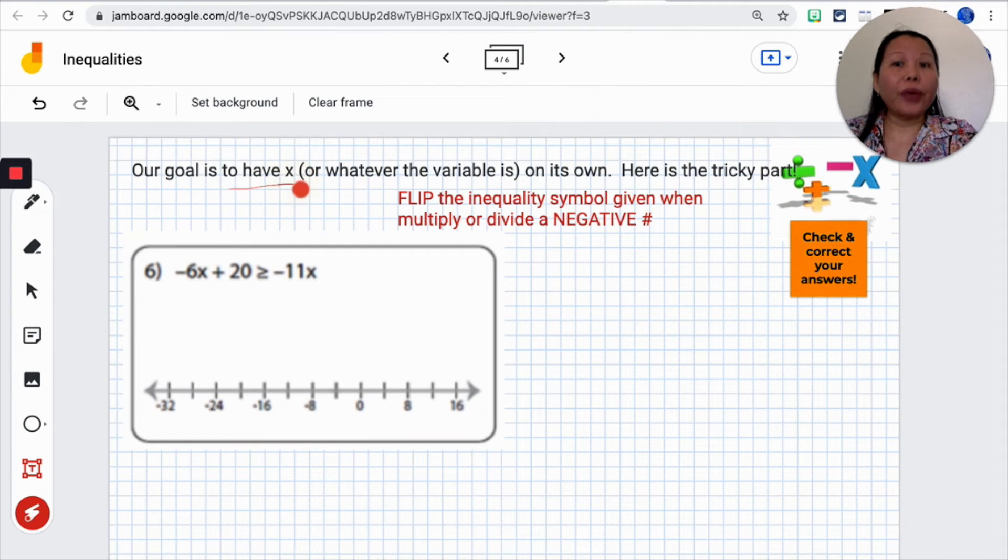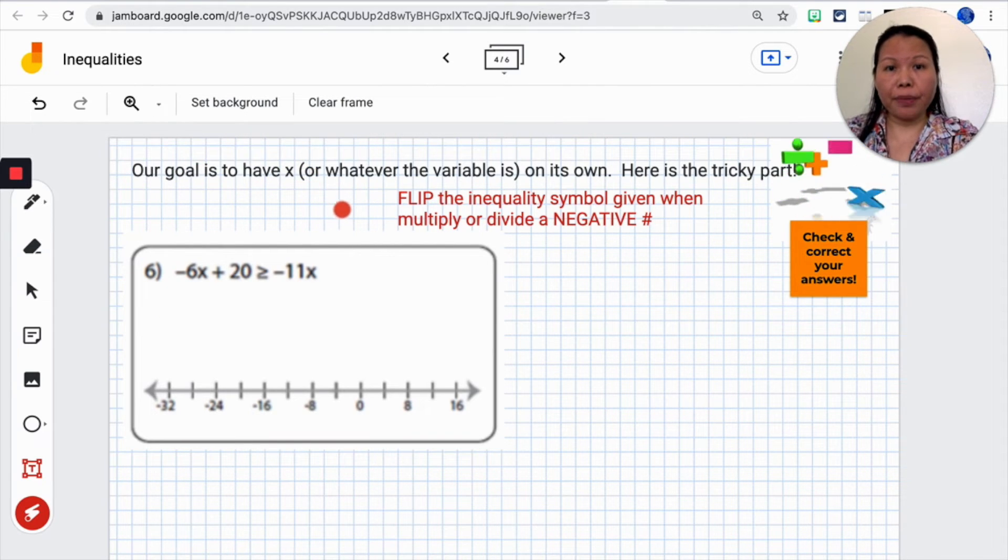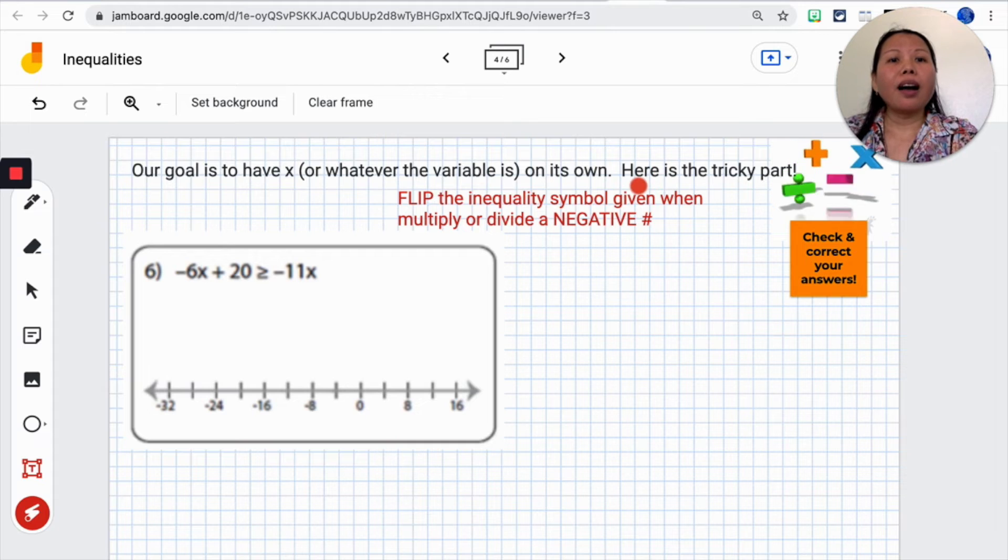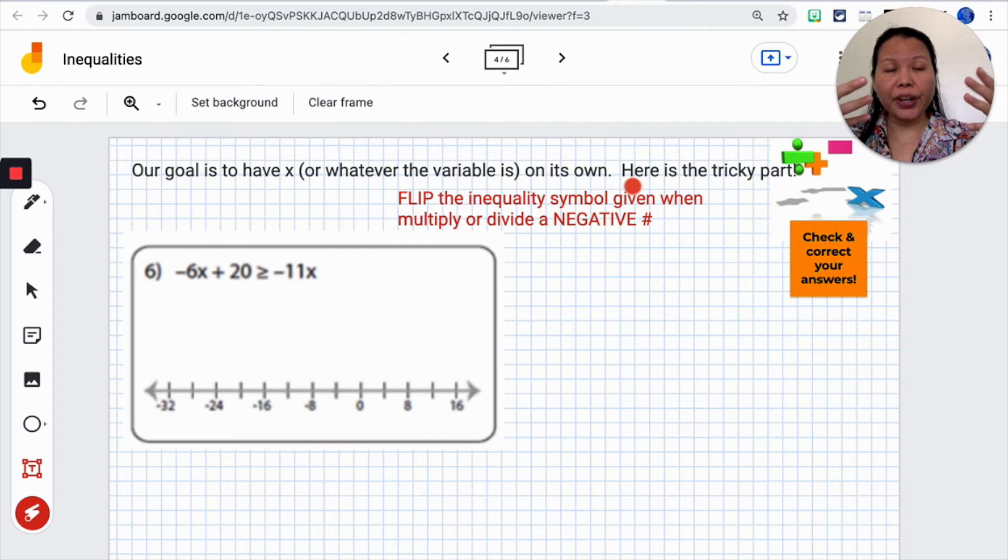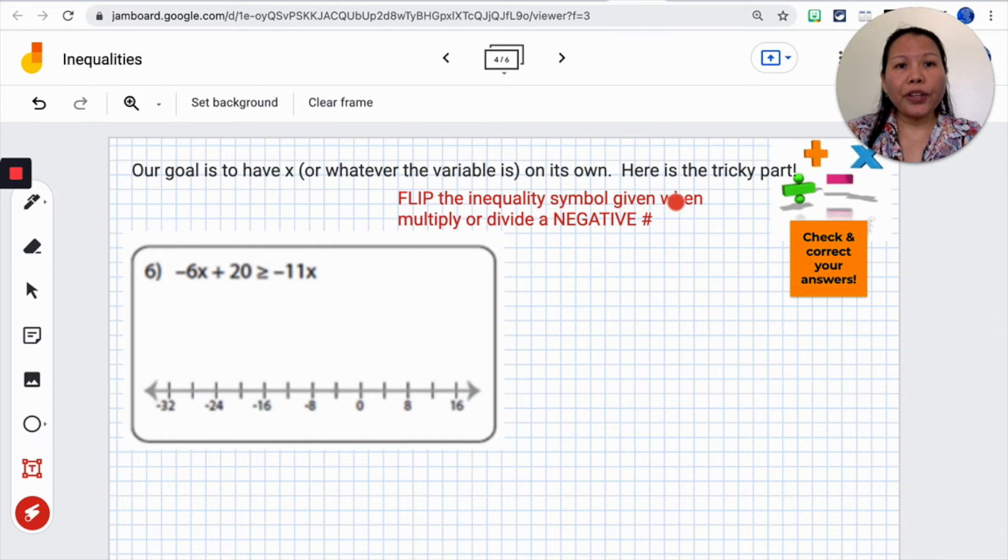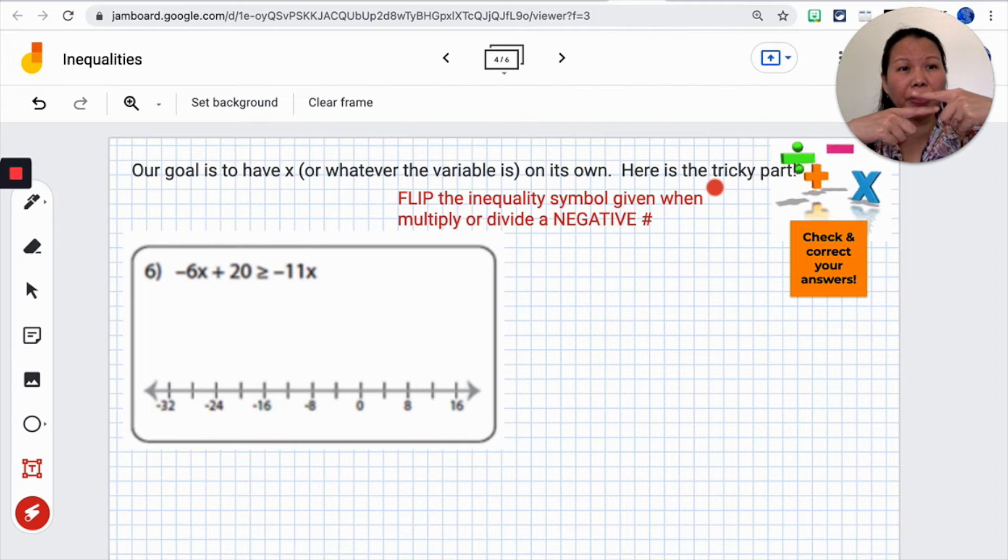Our goal is to have x or whatever variable given in your problem on its own. We are solving and we are doing the inverse operation. Everything is the same. When you have the equal sign, I guess the tricky part also applies.